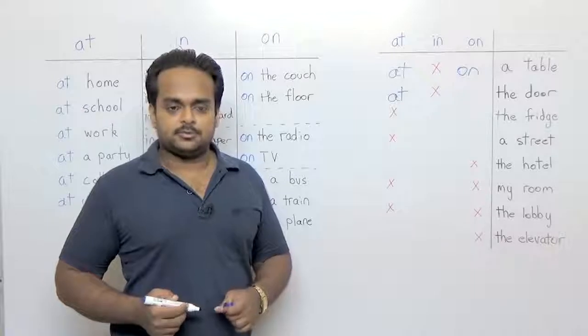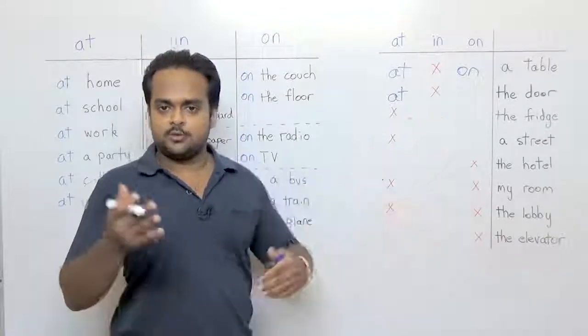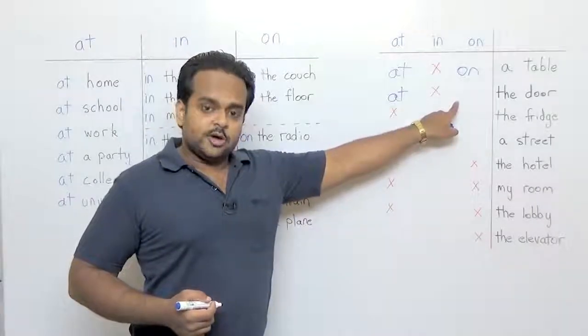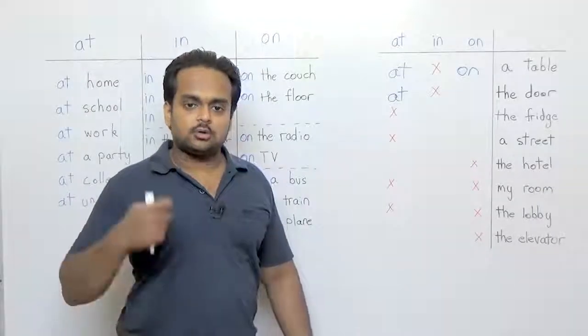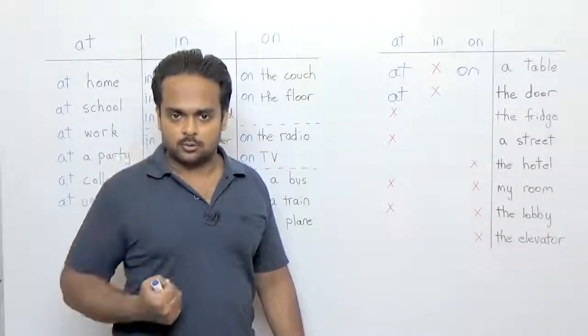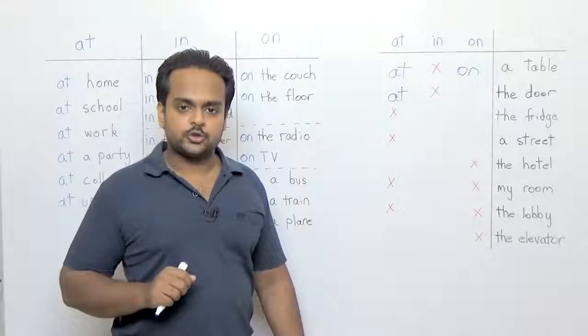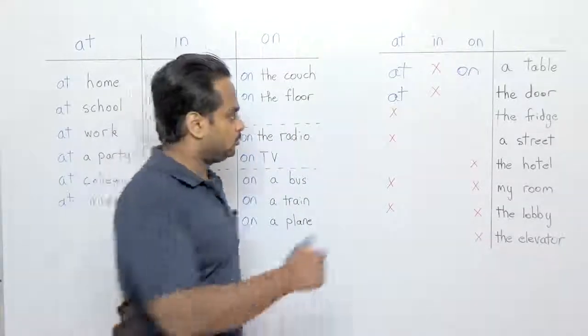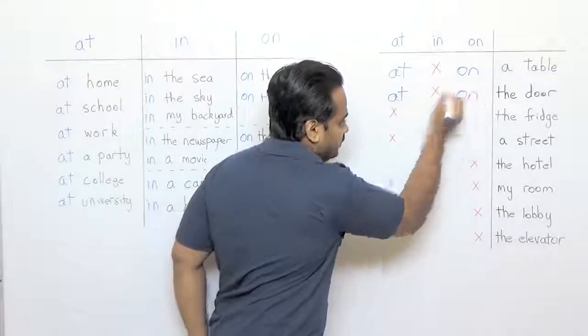For example, there's someone at the door can you please see who it is. We can also use on if we want to talk about someone knocking on a door. We knock on doors. Or if you want to talk about sticking something like a poster on a door.